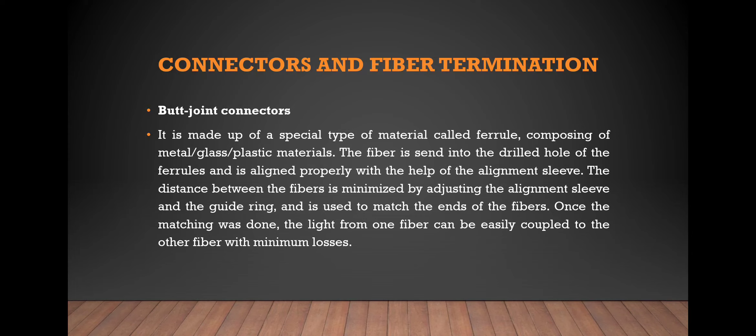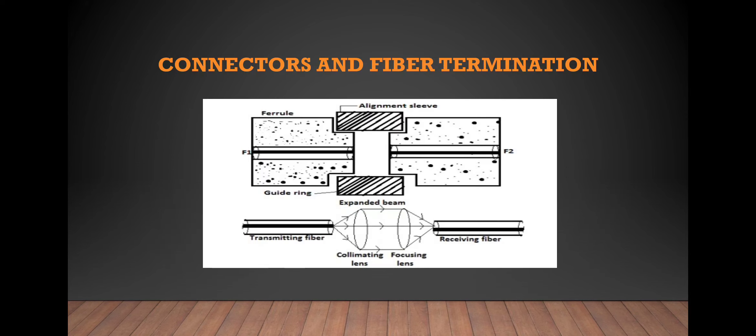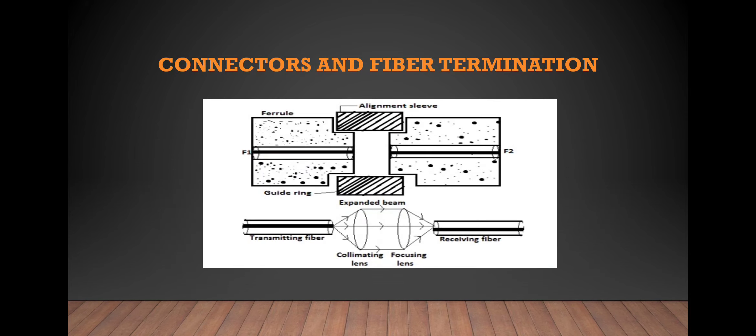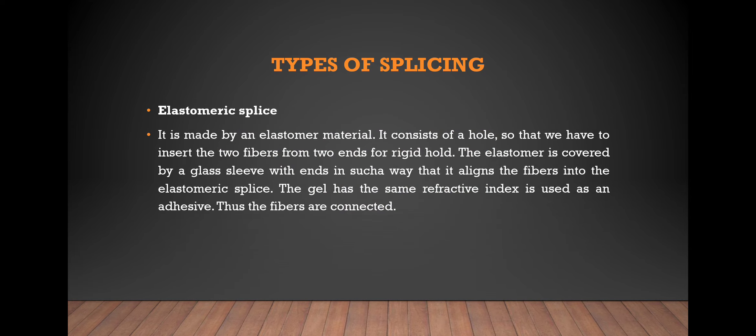Once the fiber matching is done, the light from one fiber can be easily coupled to the other fiber. This is the diagram for the butt joint connection.